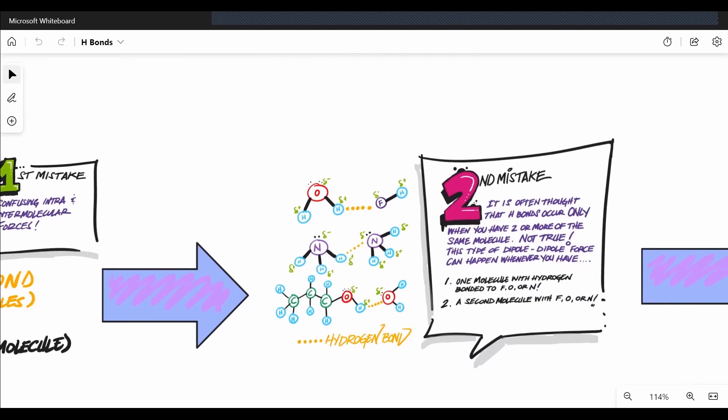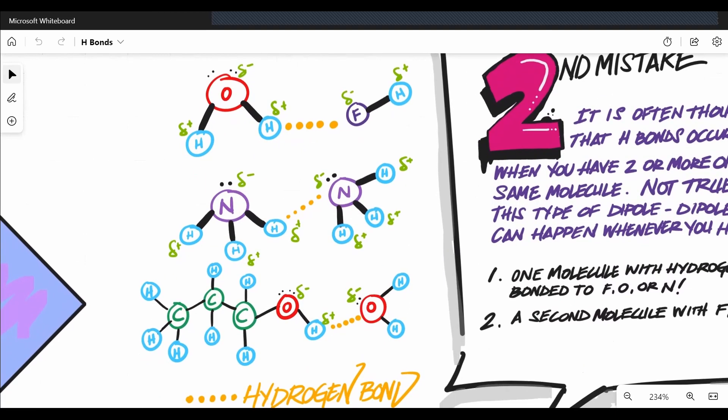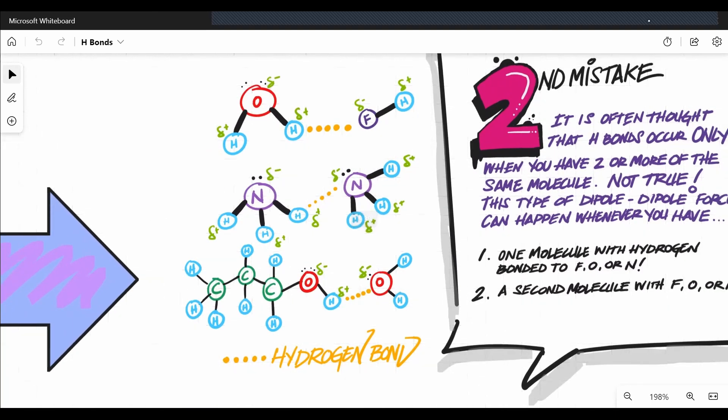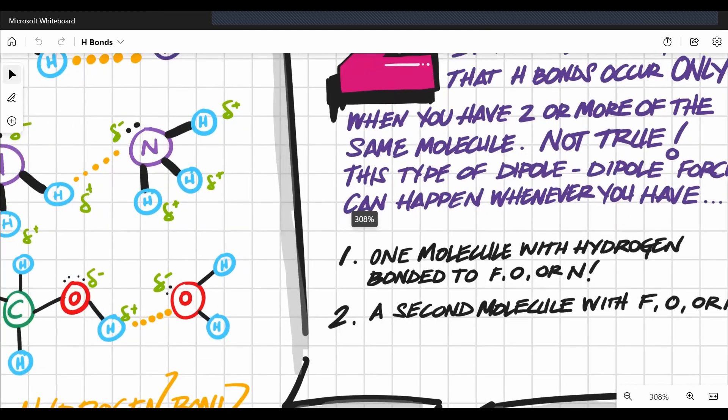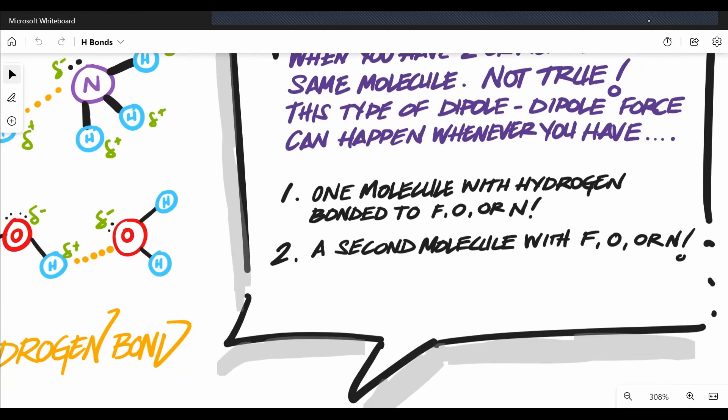In this scenario, I show you three different sets of molecules. And in each one, there's a hydrogen bond happening. So in set one, we have a water hydrogen bonded to an HF. In set two, we have two ammonia molecules, which is NH3, and they're hydrogen bonded. And of course, in the last one, we have an alcohol molecule hydrogen bonded to H2O. So what's the big mistake people make with a scenario like this? It's often thought that H bonds occur only when you have two or more of the same molecule. For example, if you have a bunch of waters, they H bond to each other. And yeah, that's true.